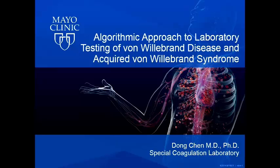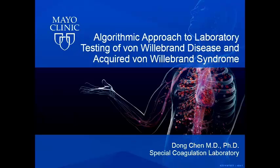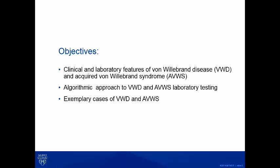Good morning everyone. My name is Dong Chen. I'm one of the co-directors of Special Coag Lab. Many of the profiles and algorithms we've developed throughout the years are actually performed in the lab. Some pieces of the algorithm are in our electronic software, and there are some physician and laboratorian interfaces with the algorithm. Today I'm going to talk about the algorithm we developed for von Willebrand disease testing — a fascinating molecule for which we developed a whole testing algorithm targeting just one protein.